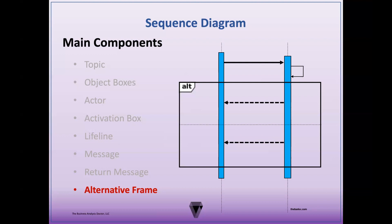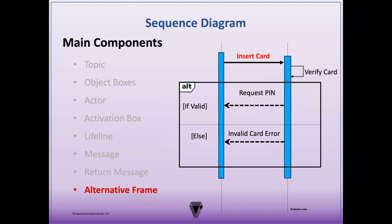The alternative frame surrounds the message interaction that can have multiple message outcomes. The syntax includes a condition for the primary or most common outcome, and else for the less common condition. For example, in an ATM transaction, when the user inserts the card, the server verifies the card — this uses a reflexive or self-message, used when an object sends a message to itself, often when some type of verification is required. The primary condition is what happens if the card is valid: the ATM requests the PIN from the customer. The else scenario is what happens if the card is not valid: displaying an invalid card error. These if/else conditions are referred to as guards — a condition that must be met for a message to be sent.